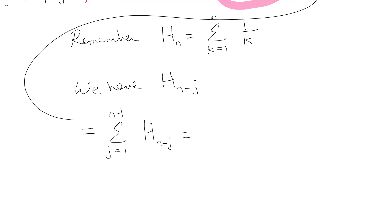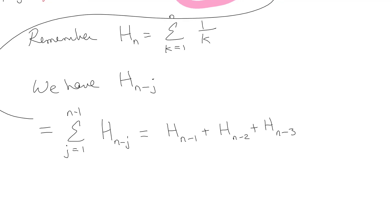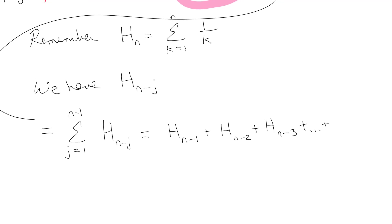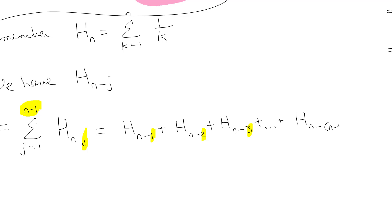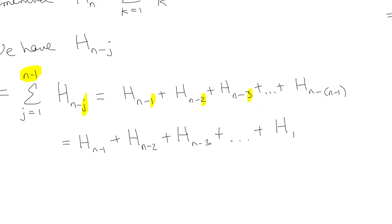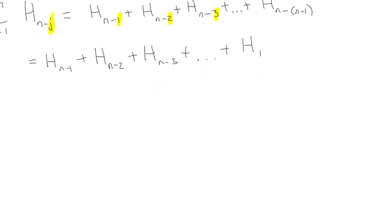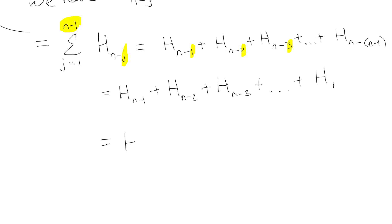Expanding by substituting j = 1, 2, 3, …, n−1: we get H_{n−1} + H_{n−2} + H_{n−3} + … + H_{n−(n−1)}, which is H_{n−1} + H_{n−2} + … + H_1. That's just a sum of harmonic numbers, written in descending order.